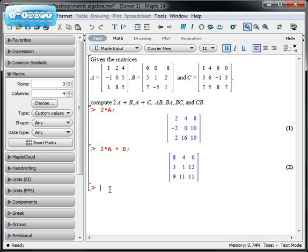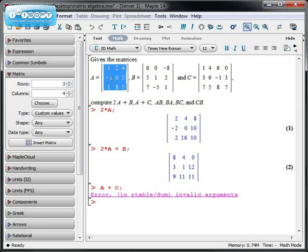A plus C, let's do this next one. A plus C comes up with an error message: Error in table sum invalid arguments. And that makes sense too. This is a 3 by 3 matrix, C is a 3 by 4 matrix. And we said that we can only add matrices if they're the same size.